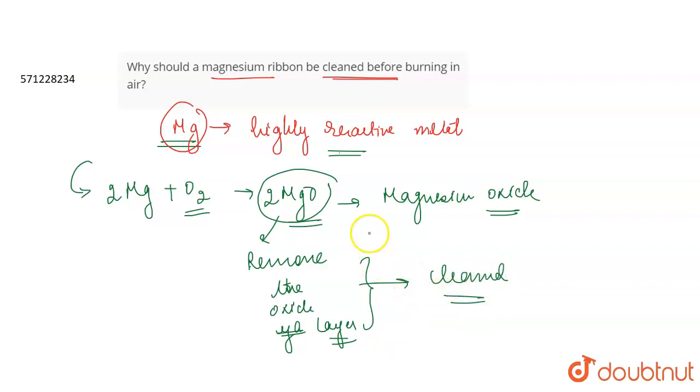It is cleaned because when it is left in air, it is very reactive. It reacts with oxygen, forms a magnesium oxide layer. So, for the process of burning, it will not burn properly if the layer is there on the magnesium ribbon. So, we have to remove this layer.